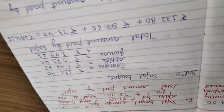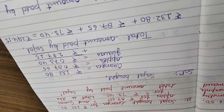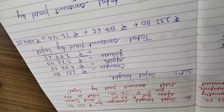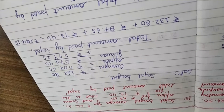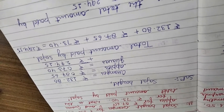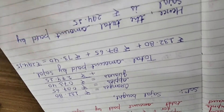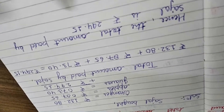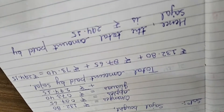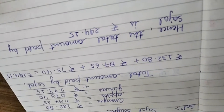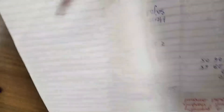Next problem: Sajal bought oranges, guavas, and apples. We add the cost of all the fruits — oranges, guavas, and apples — to find how much Sajal paid in total.